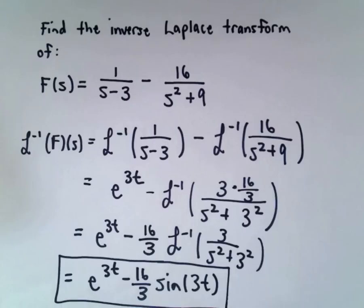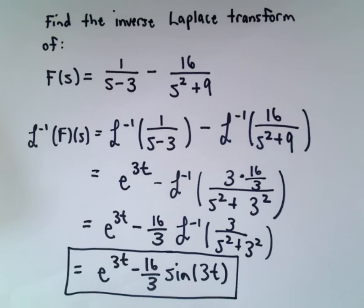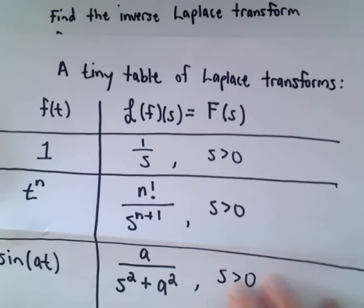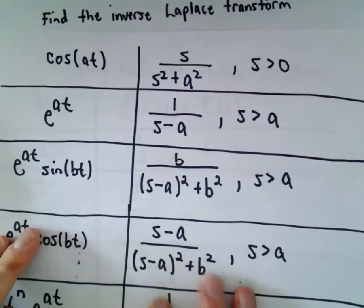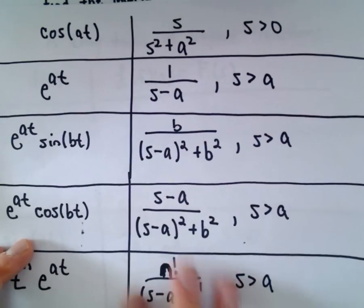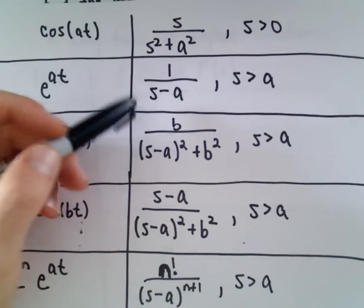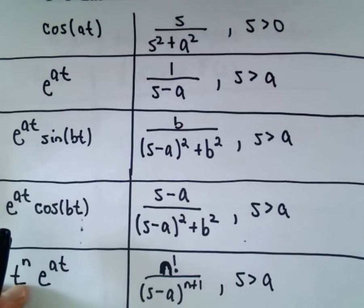Now we have found our inverse Laplace transform of this original f(s) equals 1 over s minus 3 minus 16 over s squared plus 9. Nothing crazy, it's just matching up the expressions with stuff in a table. You may have to manipulate things a little bit to make them algebraically equivalent to match up with one of the formulas in the table.